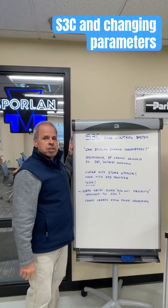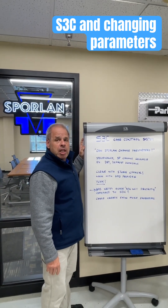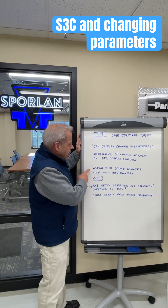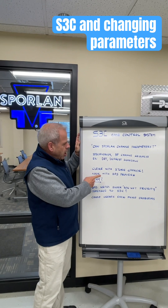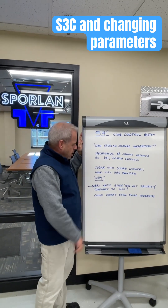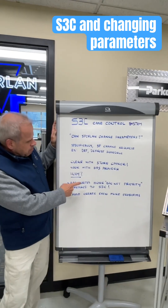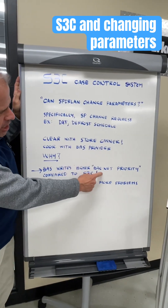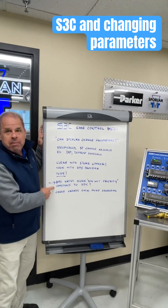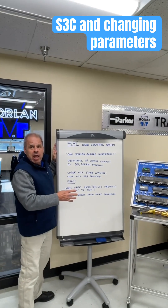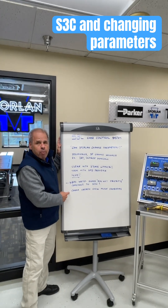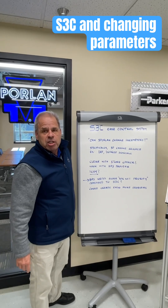Well, we can get into the S3C portal and do just about anything we want, but that's not the right way to handle this. The right way? Clear it with the store owner and coordinate with the building automation system provider. Because the BAS writes at a higher BACnet priority compared to the S3C. If you don't do it this way, you're likely to create even more problems that you'll just have to fix later.